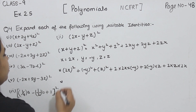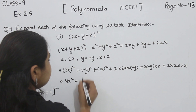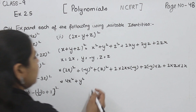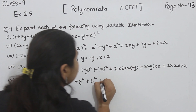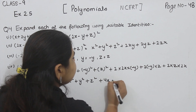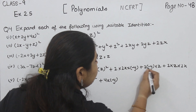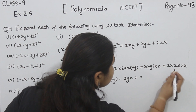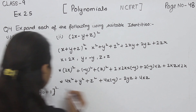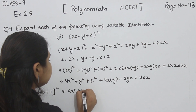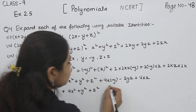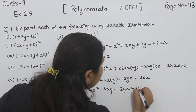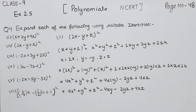Now we are going to solve it. 2 squared is 4, so 4X square, plus Y square — since minus times minus gives positive — plus Z square, plus 2 times 2 times X times minus Y gives minus 4XY, plus 2 times minus Y times Z gives minus 2YZ, plus 2 times Z times 2X gives 4XZ. So the result is 4X square plus Y square plus Z square minus 4XY minus 2YZ plus 4XZ. This is part 2.